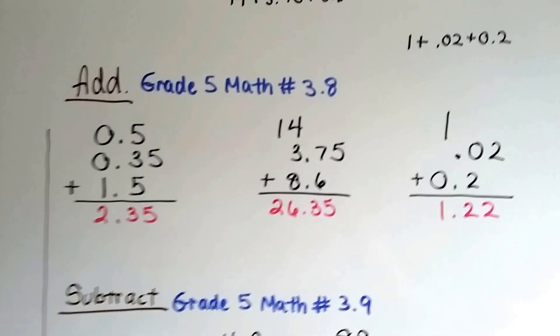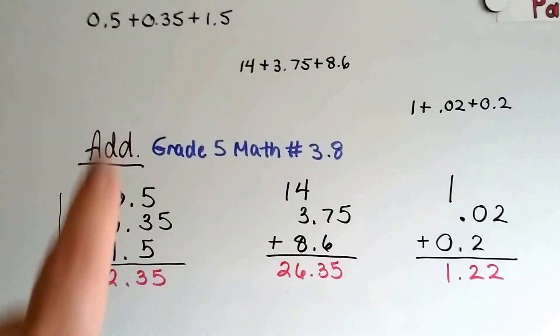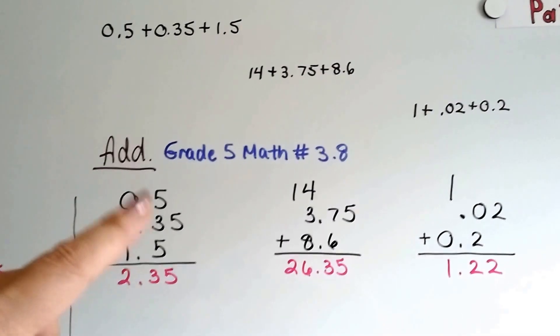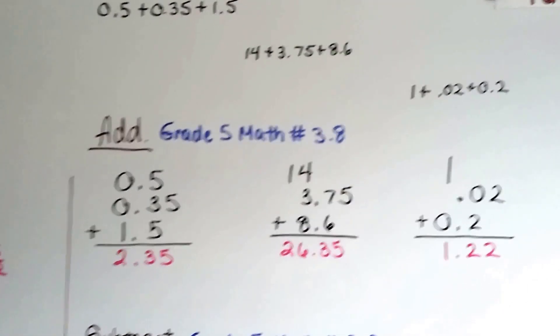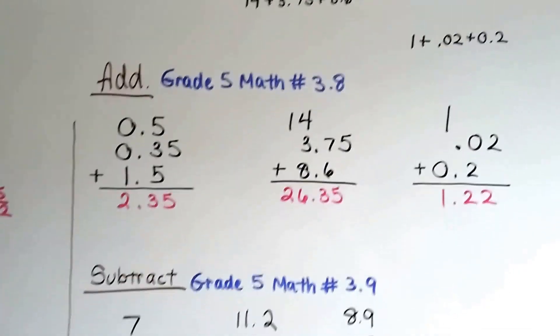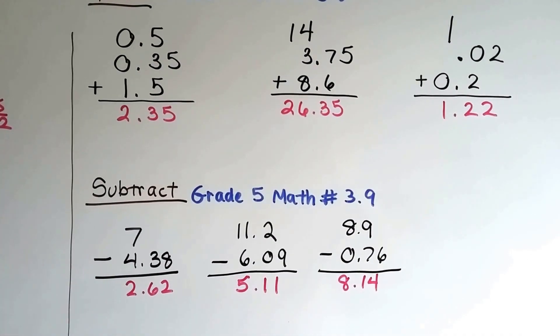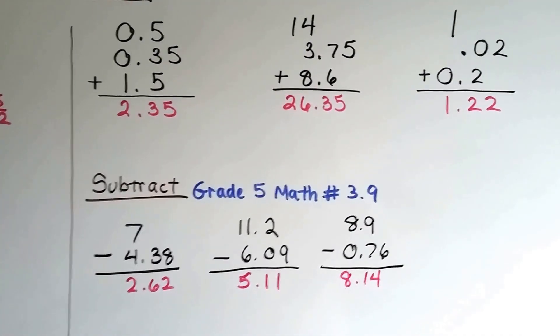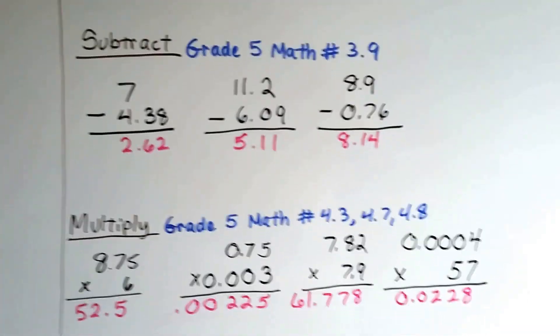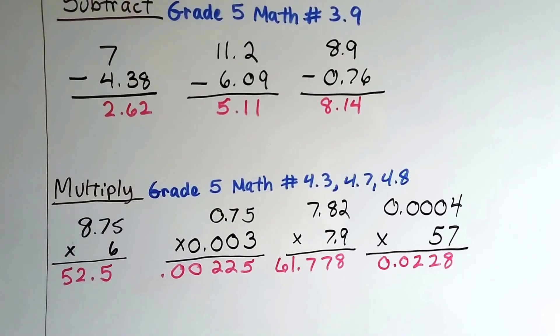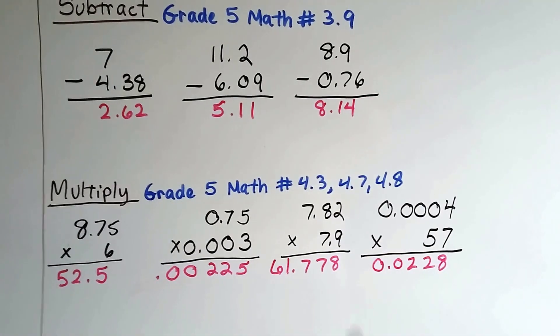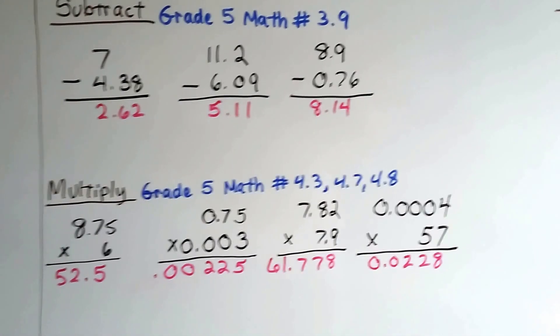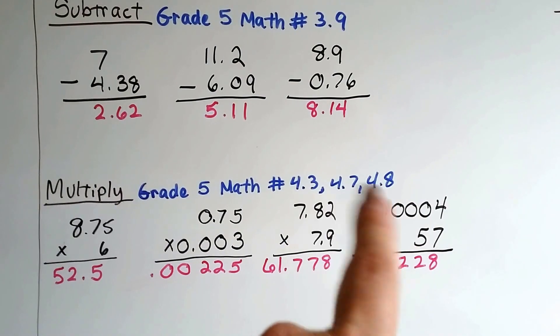You also need to know how to add decimals. And if they're written in sentence form, you need to know how to stack them and line up the decimals. That's in Grade 5 Math video number 3.8. You need to know how to subtract decimals. That's in Grade 5 Math 3.9. You need to know how to multiply decimals. That's in Grade 5 Math 4.3, 4.7 and 4.8. And there's even 4.4, 4.5 and 4.6, but they're not as important as these three.